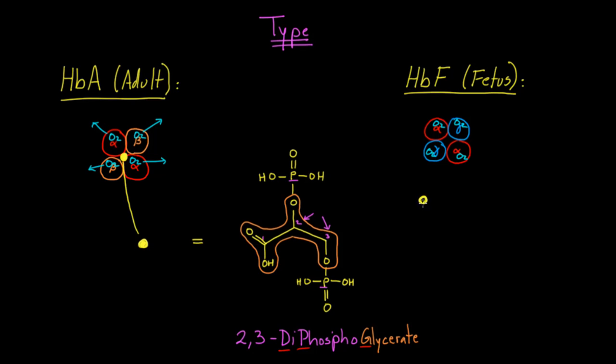Now when this molecule comes over on this side, on the fetus side, and tries to bond, guess what happens? Well, these gamma subunits basically say, go away. They don't want to bind to this 2,3-DPG. They don't have the right shape for it. So this molecule doesn't bind as easily to hemoglobin F. And as a result, those molecules of hemoglobin don't get rid of oxygen nearly as easily as the hemoglobin A does.